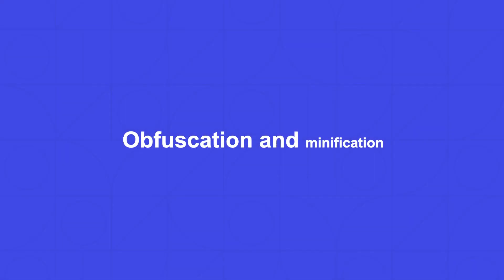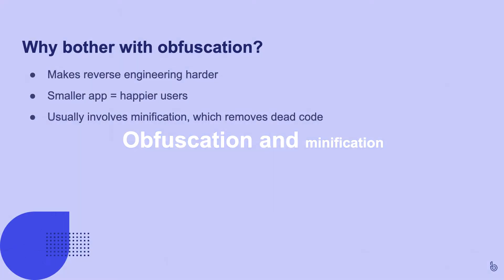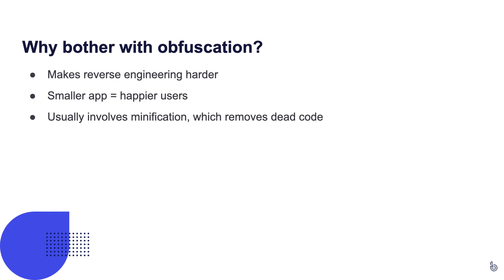We now have a crash reporting SDK which captures errors, delivers them, and allows users to manually notify their own errors. The next thing to consider is obfuscation and minification. A lot of apps use obfuscation for several benefits — it makes it harder to reverse engineer an app or clone it. Obfuscation also tends to get bundled in with minification which removes dead code. A smaller app means your app takes less time to download and takes up less disk space on the user's device, which makes them more likely to download it.